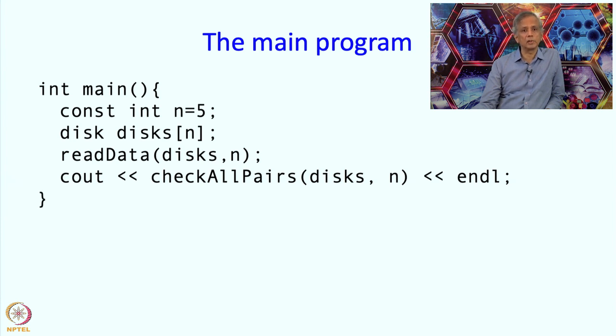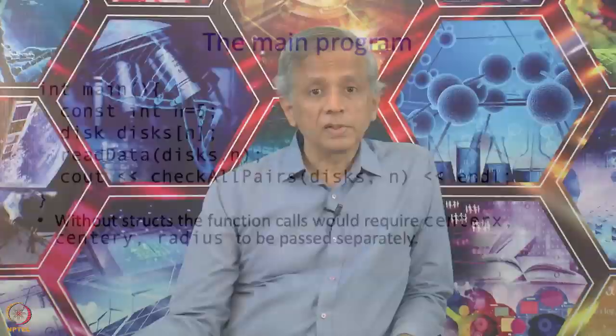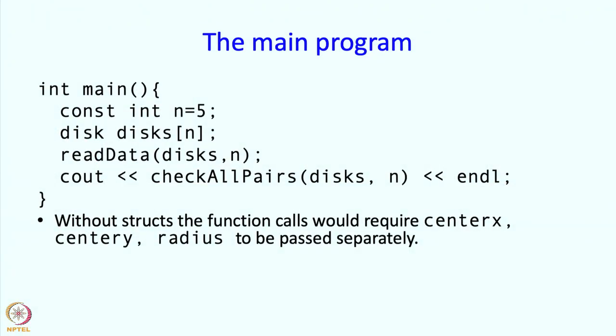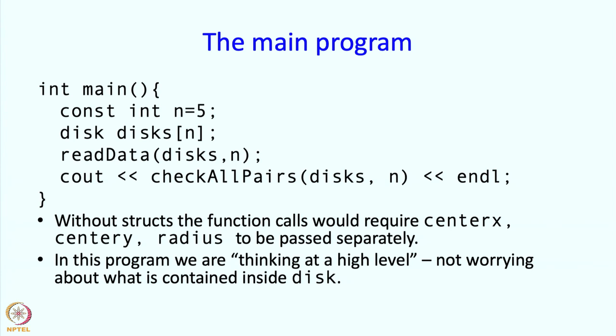The main program is quite short and sweet, and it has steps which have been given names, and these steps are functions. We're passing data to the functions, but it doesn't look like a lot of data. There are not many parameter arguments that we're passing. We're just really passing the main argument, which is the disks, and then the number of elements in it. There's a certain kind of compactness or neatness to this entire program. Without structs, you would have to have lots of arrays being passed, which would just look a bit more cluttered.